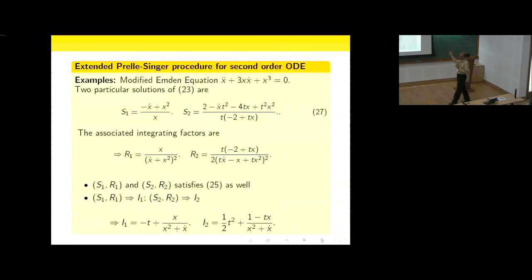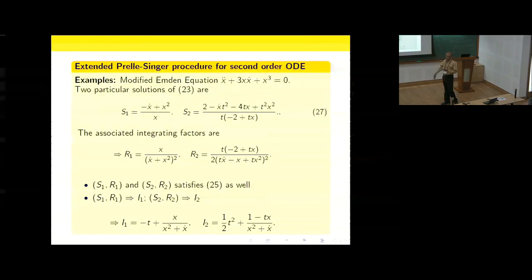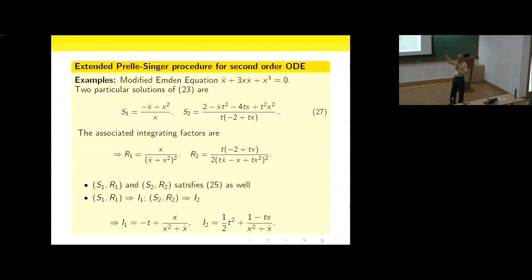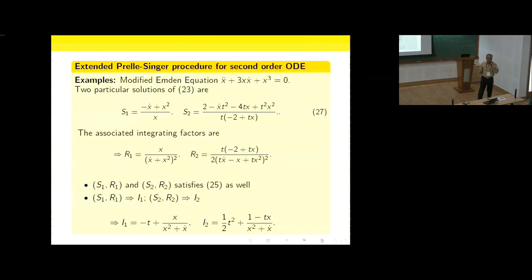We thus have a very systematic procedure for identifying integrable dynamical systems, provided we can find the null functions S and integrating factors R. For a third-order equation, there are two null functions and one integrating factor, with five consistency conditions. In general, for an nth-order equation there are n−1 null functions and one integrating factor R. This extended Preller-Singer procedure applies to nth-order dynamical systems.